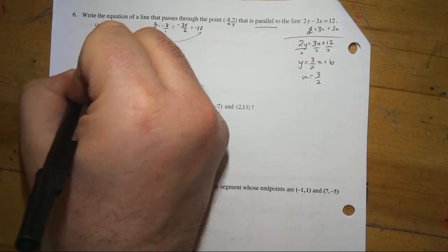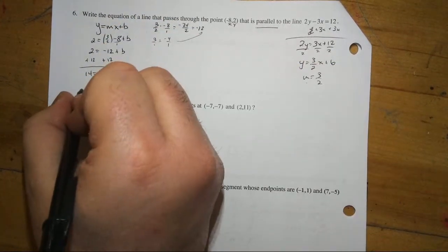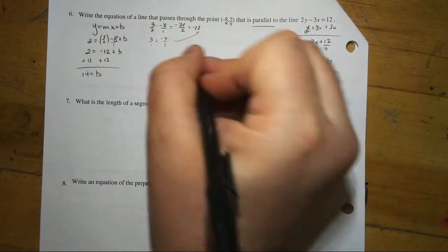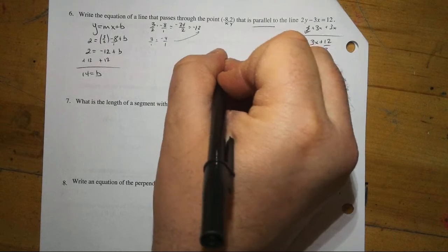We'll add 12 to both sides to get 14. And now we have our slope and our y-intercept. So, it should be y equals 3 over 2x plus 14.